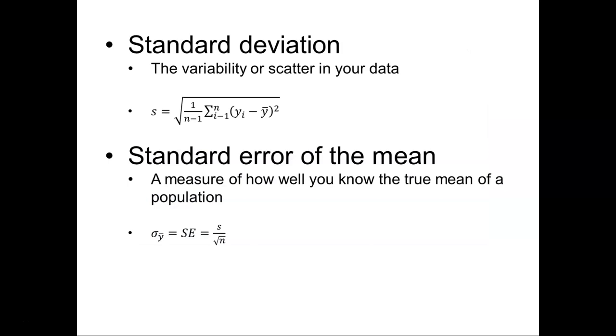The standard deviation is just the variability or the scatter in your data. The standard deviation little s can be taken as a square root of everything in this formula. If we know what n is, how many samples we have, we can know what each yi value is. That's the ith observation of some variable y that we're interested in. And we know the mean value y bar. We can add up the differences between each observation minus their mean, square it, divide by n minus 1 and take the square root, and we can calculate the standard deviation.